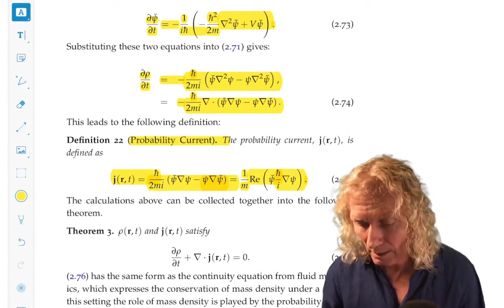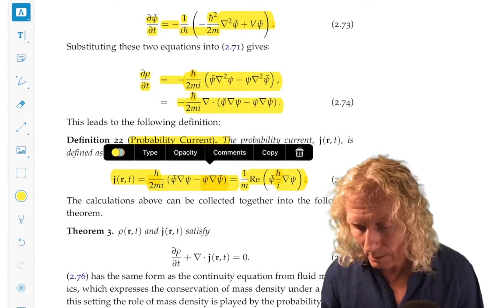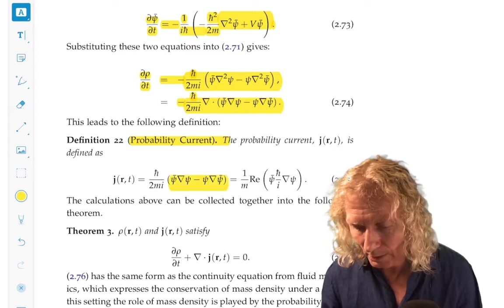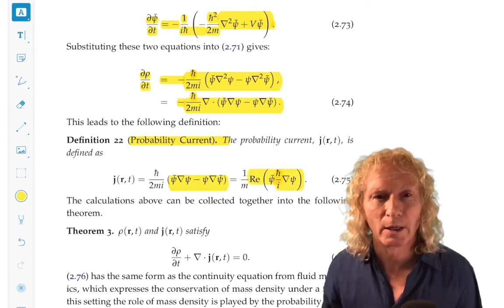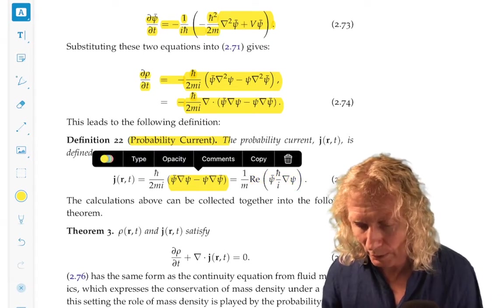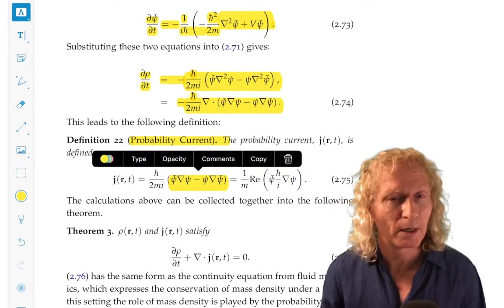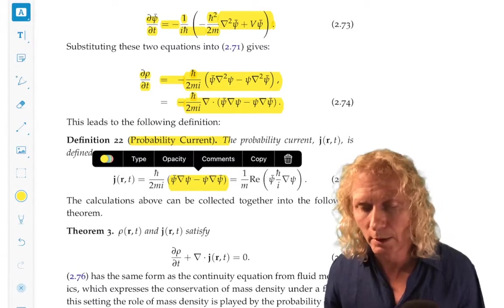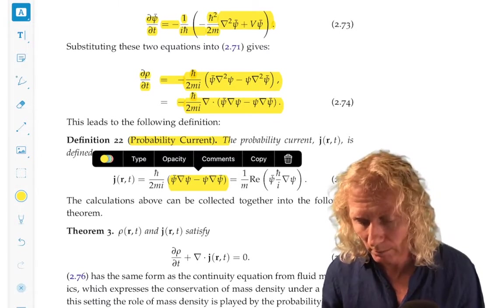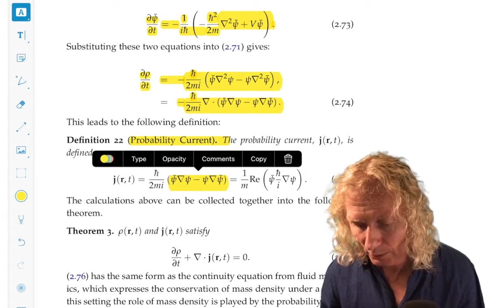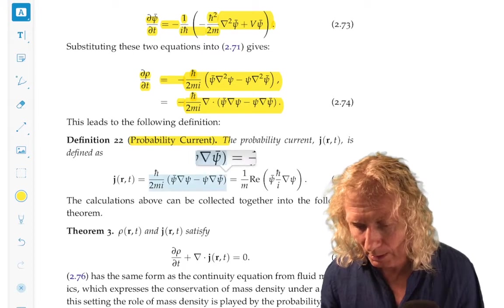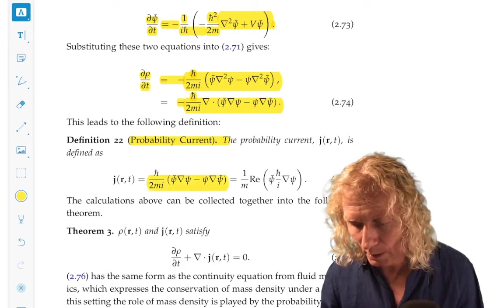Now, that's not obvious that you can go from here to here without doing a calculation. The first expression is what we get from above just by substituting into the equation dψ/dt, dψ bar/dt from the Schrödinger equation. So, I want you, starting with this, to show that this can be written in this form.